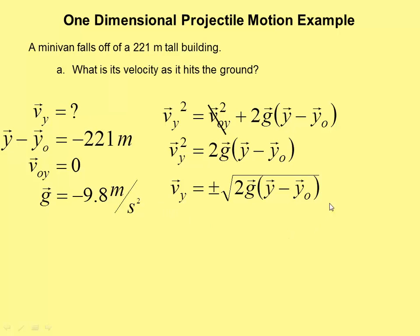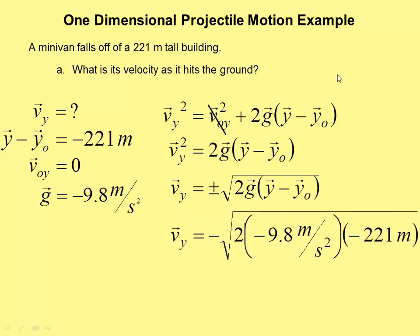This is a vector equation. So the positive or negative means direction. So if we want the velocity as it hits the ground, well as it hits the ground it will be going down and therefore we'll have a negative final velocity. So we're going to choose the negative answer here.